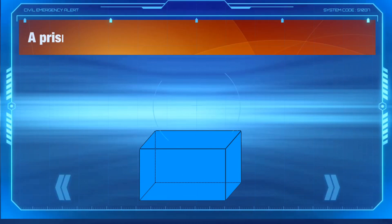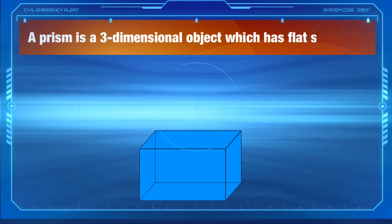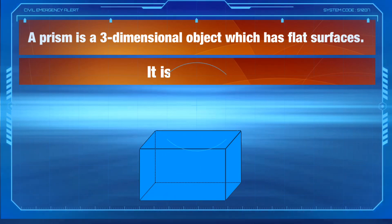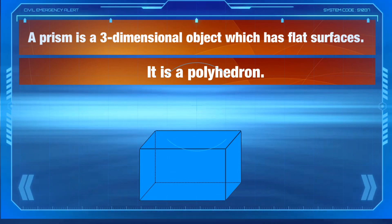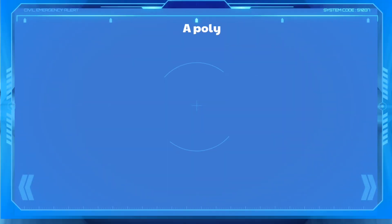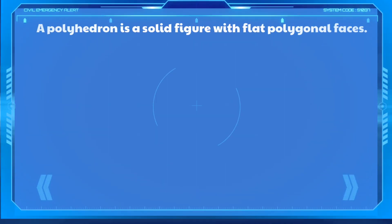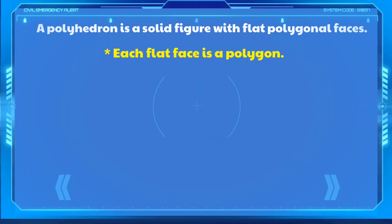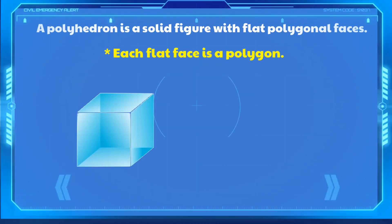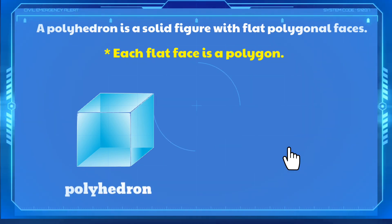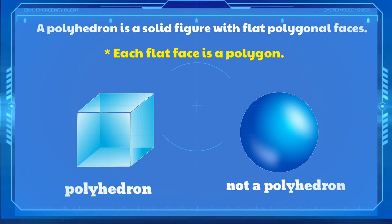A prism is a three-dimensional object which has flat surfaces. It is a polyhedron. A polyhedron is a solid figure with flat polygonal faces. Each flat face is a polygon. A cube is a polyhedron. A sphere is not a polyhedron because it doesn't have flat surfaces and polygonal faces.